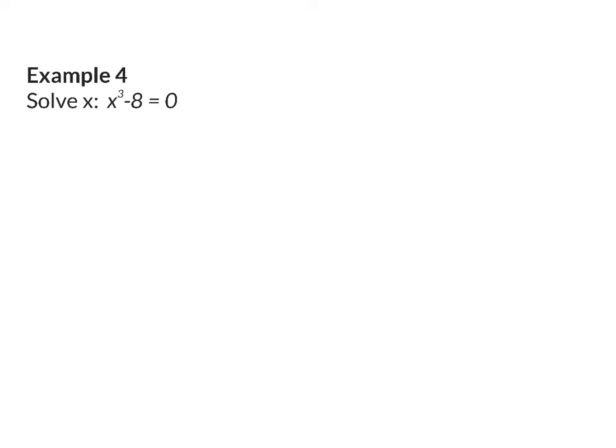In example 4, we once again have the equation equal to zero, so we can start factorizing. Here you can make use of your calculator to determine the first factor, or you can realize that this is a difference between two cubes, so my first bracket can simply be the cube root of each term.